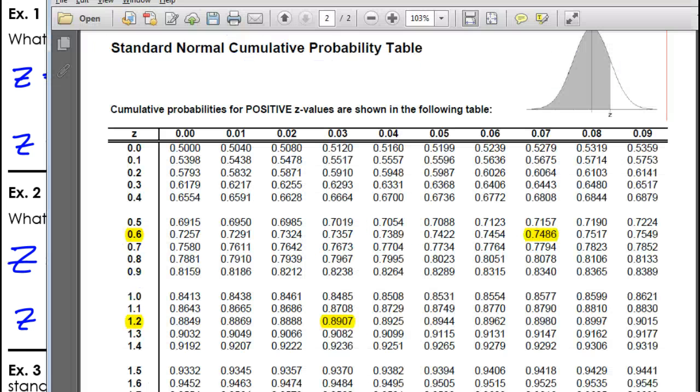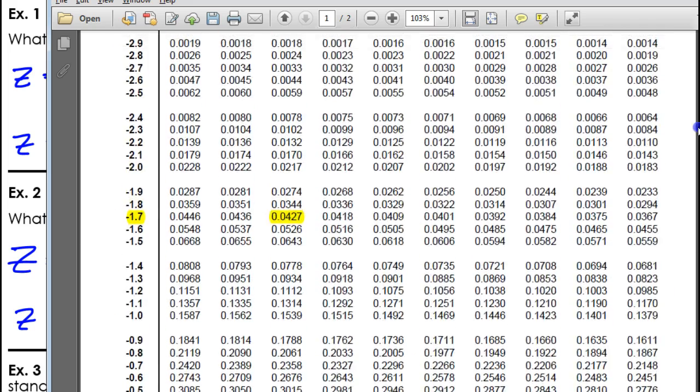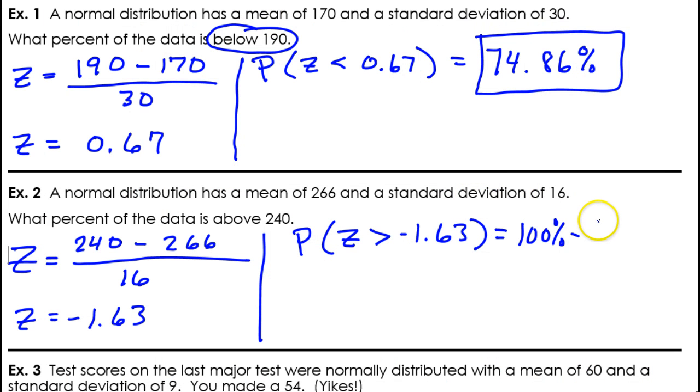So, we're going to have to do 100% minus whatever the chart says. So, negative 1.63, we find it. Okay. So, negative 1.63. Is there a way to erase these marks that are here? Okay. So, here's negative 1.6. The 3 tells me which column to look at. So, 0, 1, 2, 3. All right. So, that's 5.16%, which I must subtract from 100. So, minus 5.16%. Help me out. What is that?